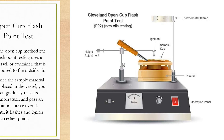Open cup flashpoint test: the open cup method for flashpoint testing uses a vessel or container that is exposed to the outside air — it is truly open so air can enter the inside. Once the sample material is placed in the vessel, you gradually raise its temperature and pass an ignition source over it until it flashes and ignites at a certain point.